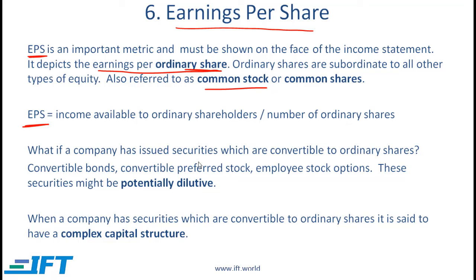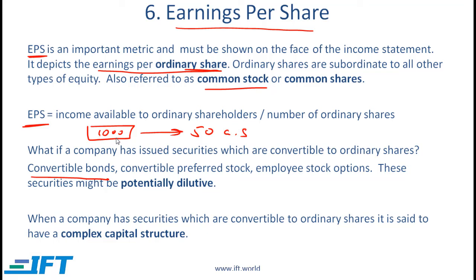What if a company has issued securities which are convertible to ordinary shares? Examples of such securities would be convertible bonds. So if a company has issued a bond with a par value of 1000 and that bond is convertible into 50 common shares, this is called a convertible bond. A company might also issue convertible preferred stock. Employee stock options are options which can be exercised by employees, and then the company has to issue new shares.